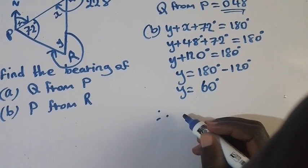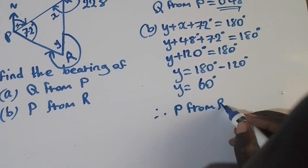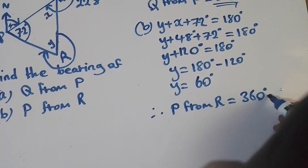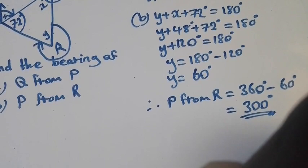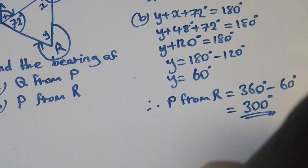So the bearing of P from R would be equal to 360 degrees minus 60 degrees. Which is equal to 300 degrees. So this is how you should answer when you have such a question. This is Mr. Moringa E. Thank you for watching. And don't forget to subscribe to my YouTube channel. See you soon.